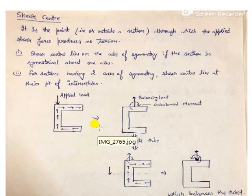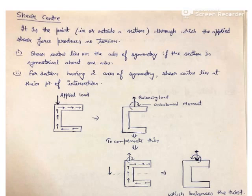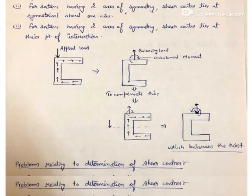We try to apply the load at a certain eccentricity so that this eccentricity creates a balancing moment that negates the clockwise moment — this is the major concept behind the shear center. For sections having symmetry about one axis (like a T-beam or L-section), the shear center lies at the axis of symmetry. For sections having two axes of symmetry (like a symmetrical I-section), the shear center lies at the intersection of those two axes. Cases of significance include I-section, C-section or channel section, and L-section.